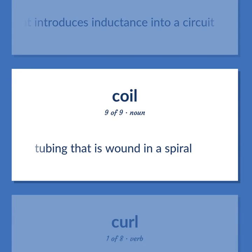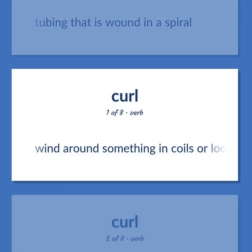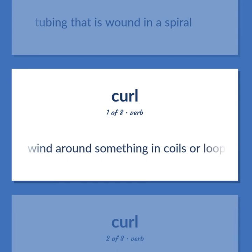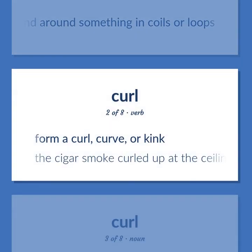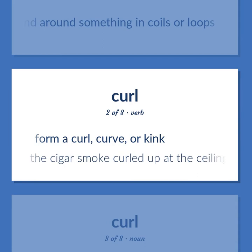Reactor consisting of a spiral of insulated wire that introduces inductance into a circuit. Tubing that is wound in a spiral. Wind around something in coils or loops. CURL: Form a curl, curve, or kink — the cigar smoke curled up at the ceiling.